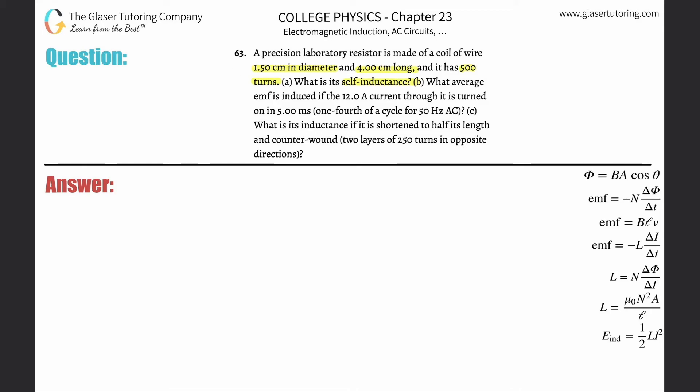We have a formula for self-inductance of a solenoid. The self-inductance L equals the permeability of free space μ₀ multiplied by the number of turns squared N², multiplied by the cross-sectional area A, divided by the length of the solenoid.